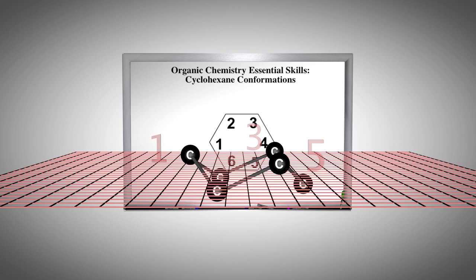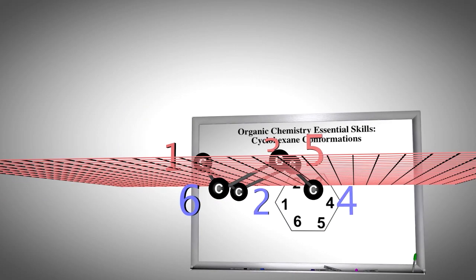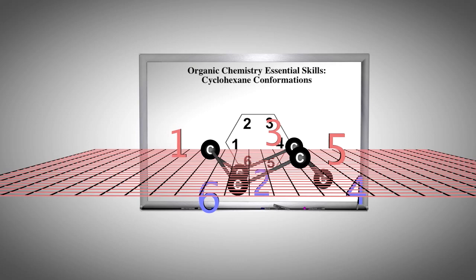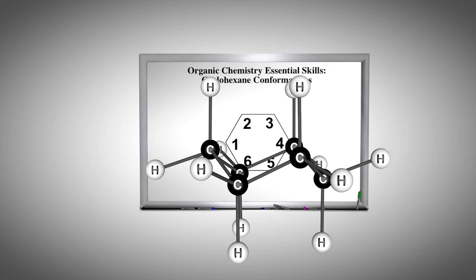Carbons 1, 3, and 5 are above the plane, and carbons 2, 4, and 6 are below the plane to obtain the necessary 109.5-degree ideal bond angles.